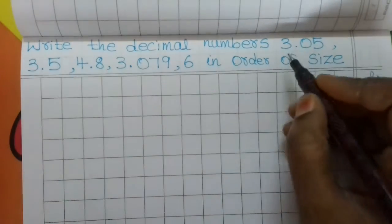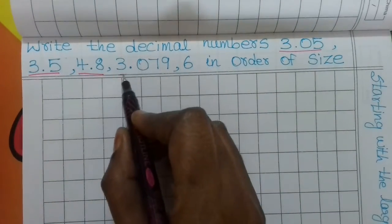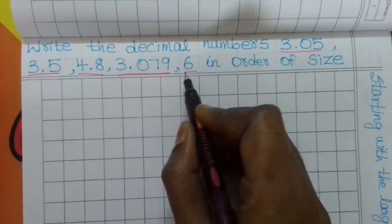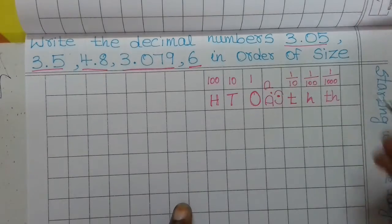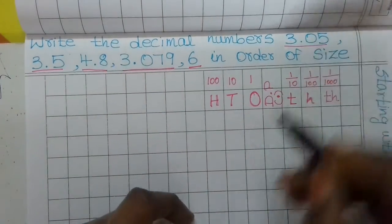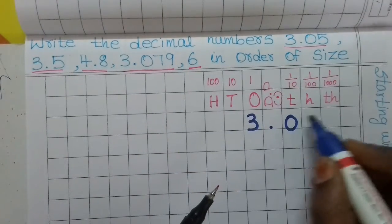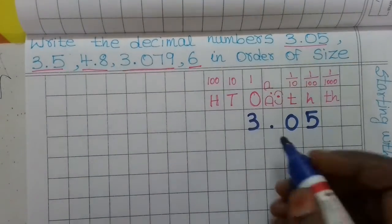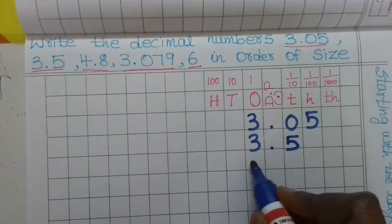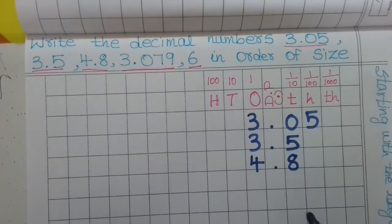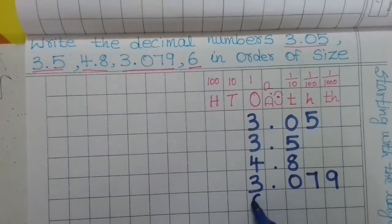Note that 6 is a whole number — it has no decimal point shown, but we treat it in the place value table. The first decimal number is 3.05: the whole number part is 3 in the ones place, then the decimal digits are 0 and 5. Next, 3.5 is placed with 3 in ones and 5 in tenths. Then 4.8, with 4 in ones and 8 in tenths. Then 3.079, with 3 in ones and digits 0, 7, 9 in the decimal places. Finally, 6 goes in the ones column.